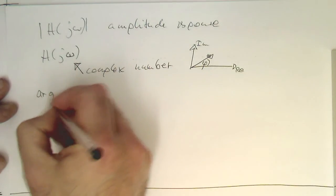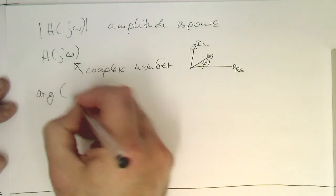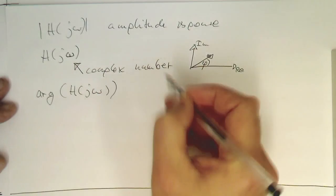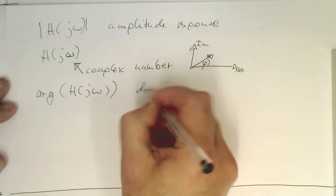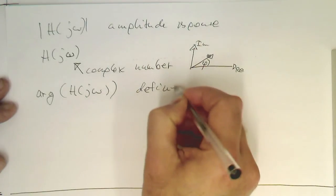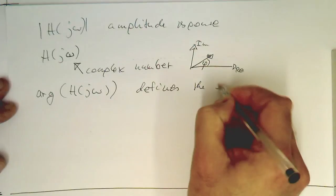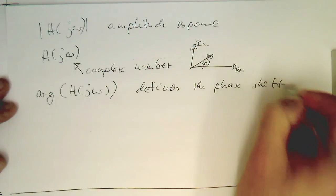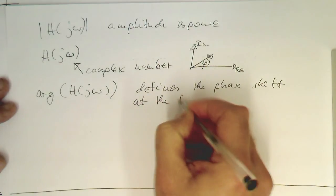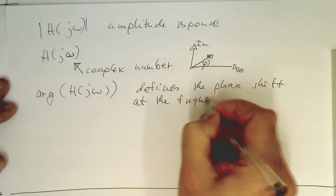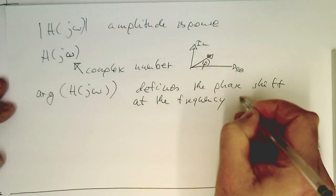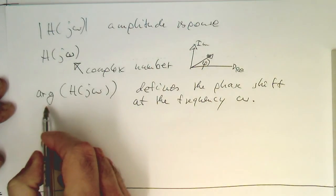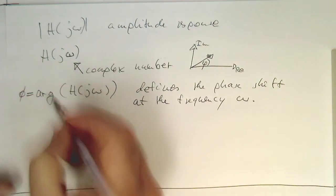If you write arc of H of j omega, this defines the phase shift at the frequency omega. With this, we're getting our phase shifts. We could call this phi or so.